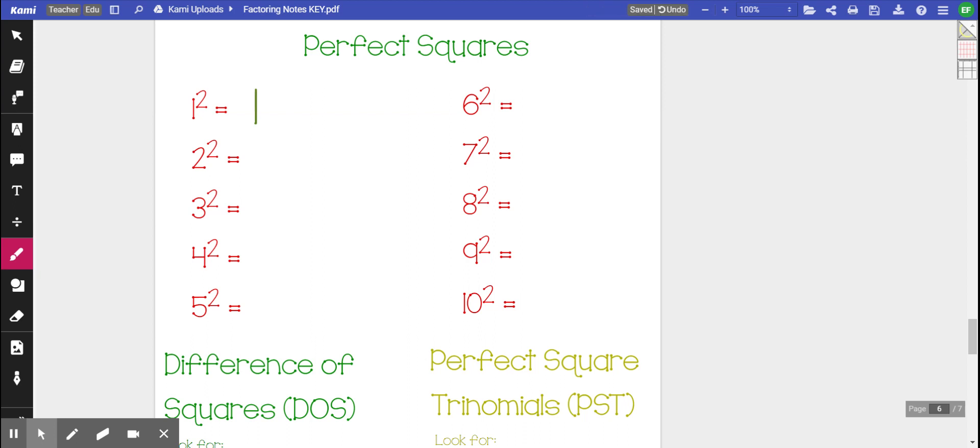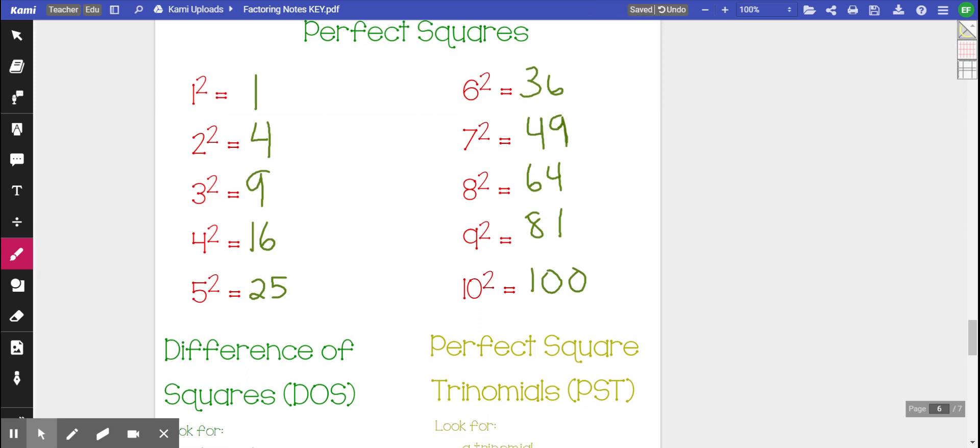Two squared is four, so four is a perfect square. Three squared is nine. Nine is a perfect square. So is 16, 25, 36, 49, 64, 81, and 100. Obviously they keep going past here but I can't keep going and listing them all out, so I just listed out the first 10.